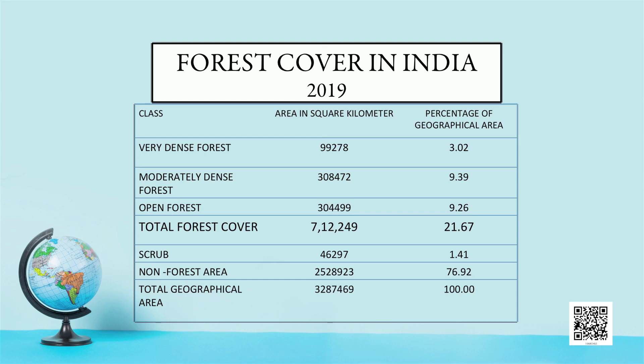Let us examine the status of forest in our country using the table on your screen. It shows different classes of forest — very dense, moderately dense, open forest, and scrubs — along with their area in square kilometers and percentage of total geographical area. The total forest cover in India in 2019 is 7,12,249 square kilometers, which accounts for 21.67 percent of the total geographical area.